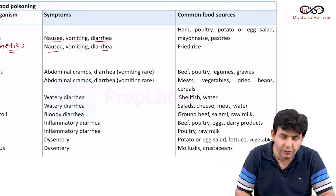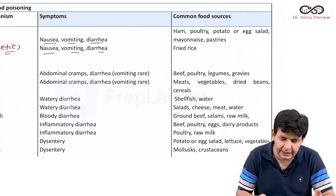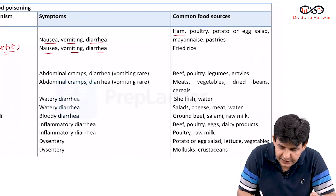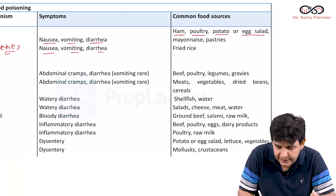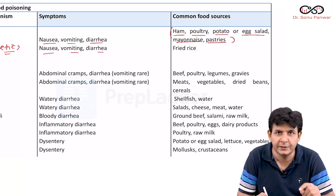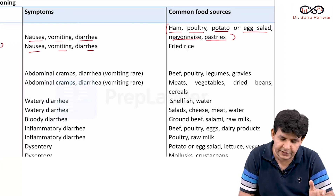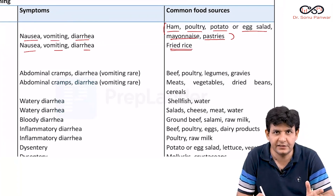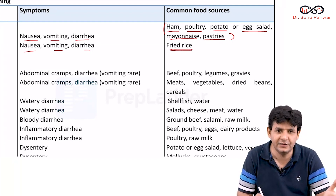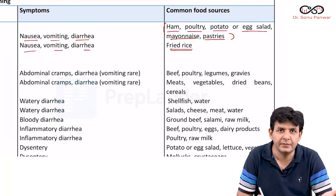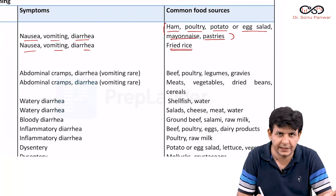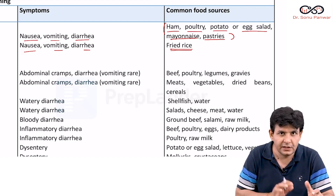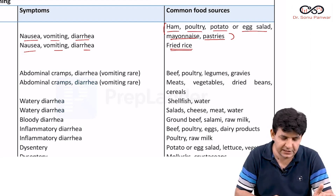After eating, in the case of Staph aureus, the implicated foods are ham, poultry products, potato, egg salad, mayonnaise, and pastries. Fried rice or Chinese reheated fried rice associates with Bacillus cereus emetic one. So this is regarding the 1 to 6 hour category.